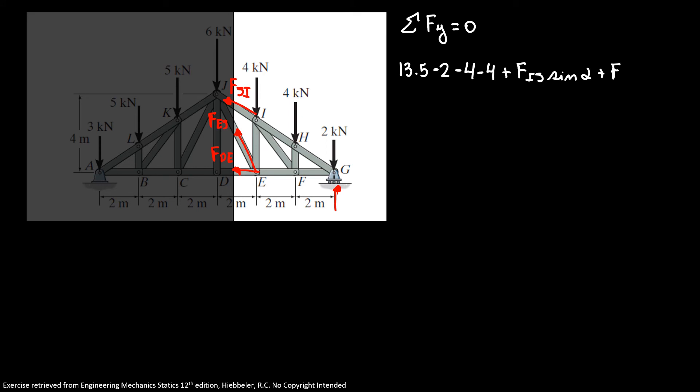So here I have 13.5, our reaction in G, minus 2 minus 4 minus 4 plus F_IJ sine of alpha plus F_EJ sine of theta equals zero. So don't forget that we have our angle theta here and here we have our angle alpha.